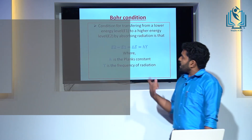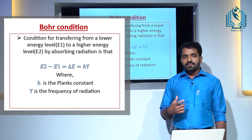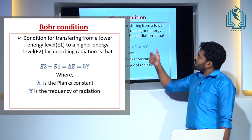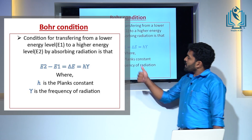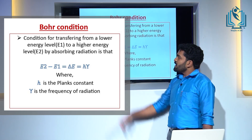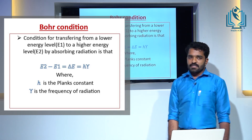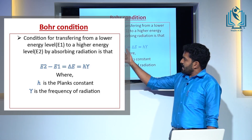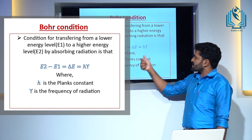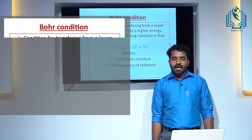Next is the Bohr condition. It is the condition for transferring from a lower energy level to a higher energy level by absorbing radiation. The Bohr condition states: E2 minus E1 equals delta E equals h-nu, where E2 is the higher energy level, E1 is the lower energy level, delta E is the energy difference between the two levels, h is Planck's constant, and nu is the frequency of the absorbed radiation.